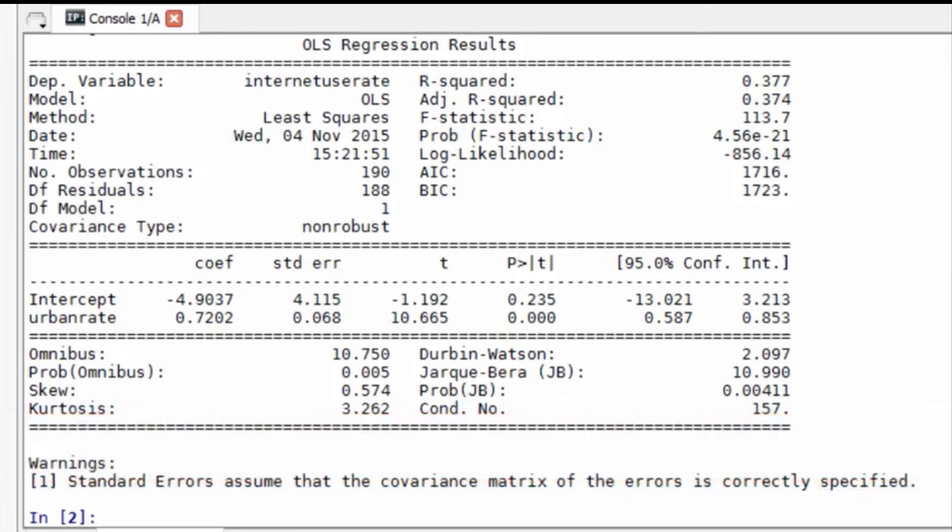Before we analyze this equation a little more in depth, let's look at some more components of our output. For example, looking just at the output for the coefficients, we have a column labeled p greater than the absolute value of t, which gives us the p-value for our explanatory variable's association with the response variable.